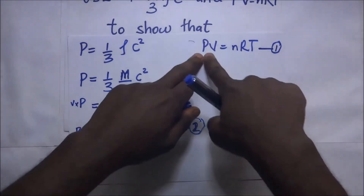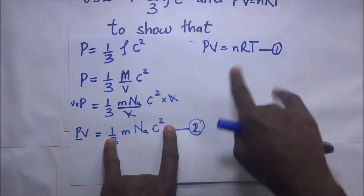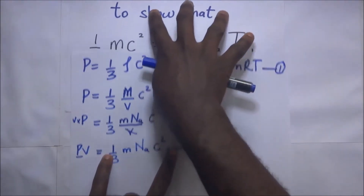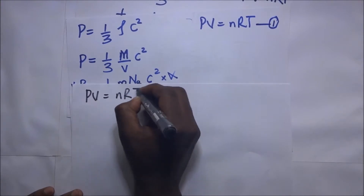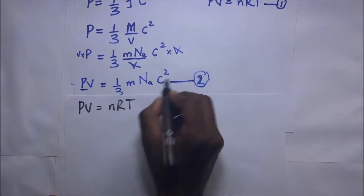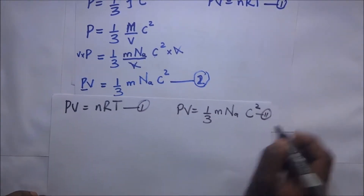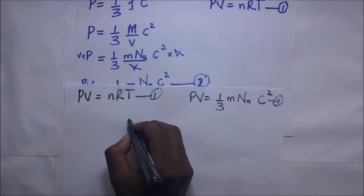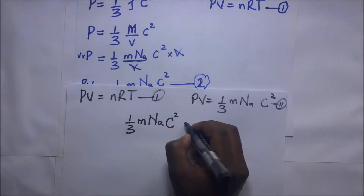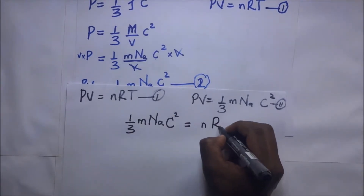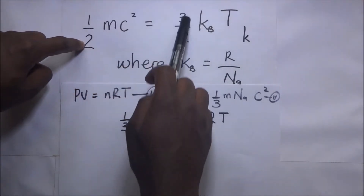We have PV as the subject of both equations: equation 1 gives PV = nRT, and equation 2 gives PV = ⅓mN_AC². Since both equal PV, we can equate them: ⅓mN_AC² = nRT. We want to show that ½mC² = (3/2)K_BT, so let's start rearranging.